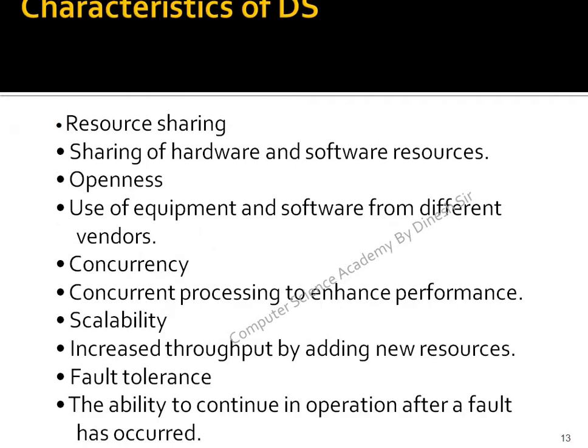These are the characteristics and features of the distributed system. First is resource sharing — sharing of hardware and software. For example, you can attach a printer on a LAN and all users can take printouts as per your command when resources are available. Concurrency means simultaneous execution of programs. Scalability refers to the capability of each system and the network. Throughput, fault tolerance — what is the capacity of tolerance, what are the limitations — these are various concepts we will discuss later.